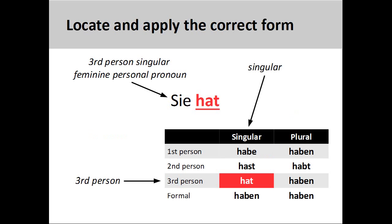When dealing with irregular and strong verbs, we need to be aware that the second and third person singular conjugations will be different. The sentence sie hat, meaning 'she has,' shows the correct third person conjugation.